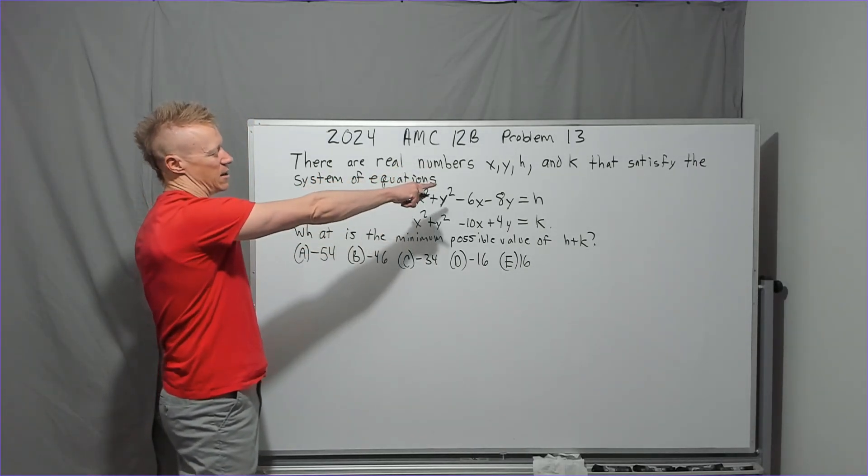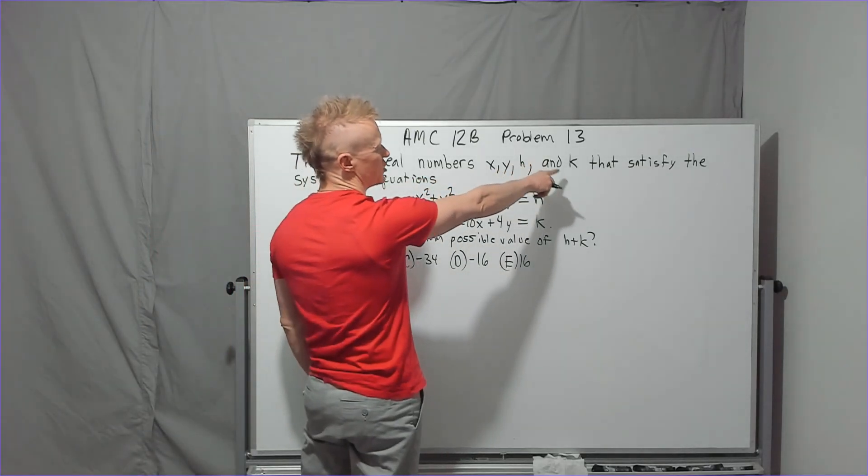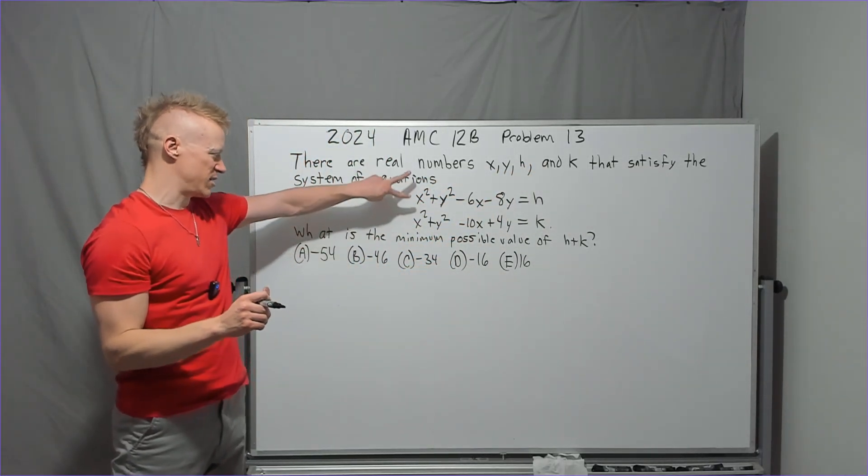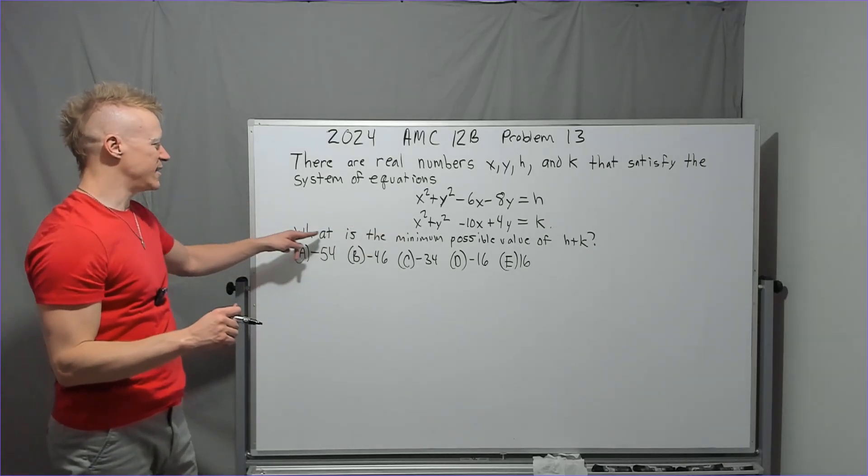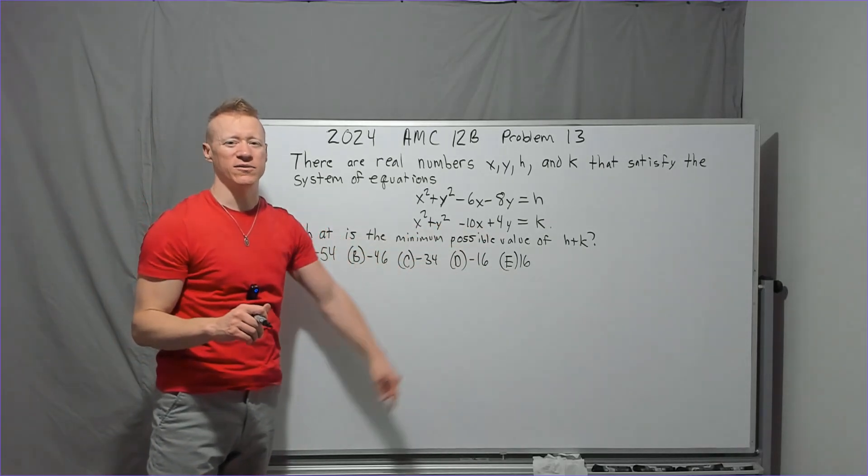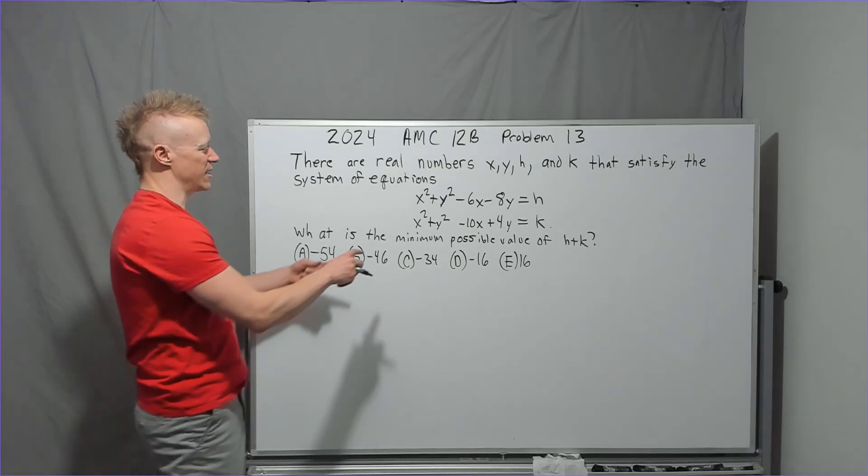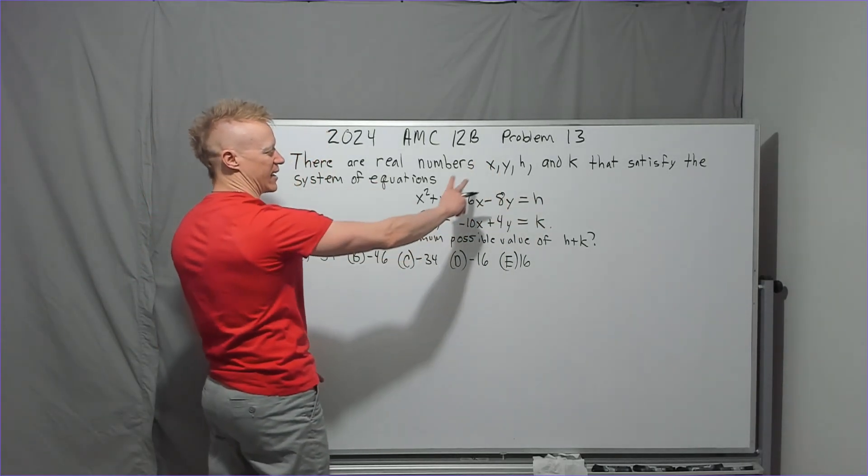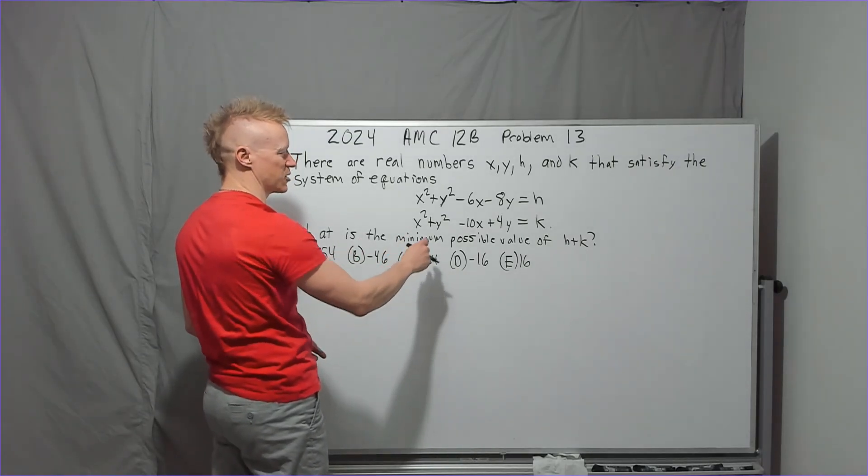It's kind of fun. There are real numbers x, y, h, and k that satisfy the system of equations here. What is the minimum possible value of h plus k? If you're like me, you look at this and go, I could add 9, add 9, I could add 16, add 16. We call that completing the square. You do it by cutting this number in half and then squaring it.